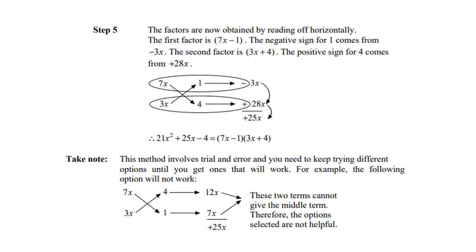Take note, this method involves trial and error, and you need to keep trying different options until you get one that will work. For example, the following option will not work. If you have 7x times 1 and 3x times 4, if you switch 1 and 4, then you get 12x and 7x, and that will not give you 25. Definitely not.